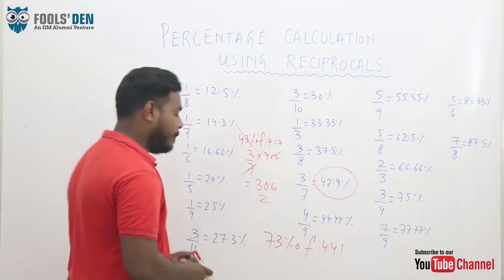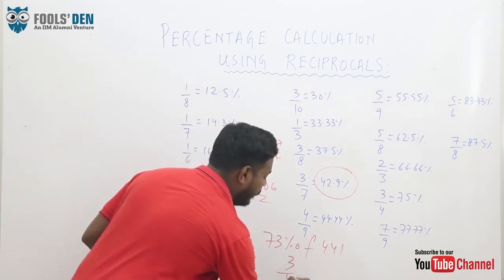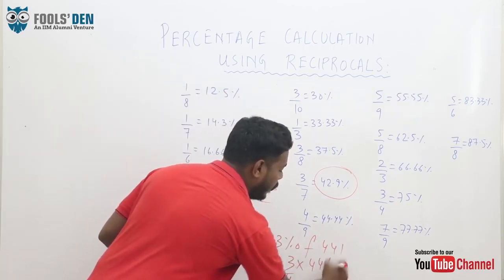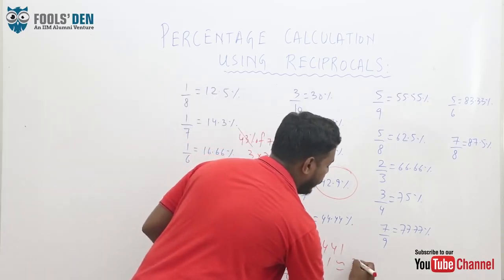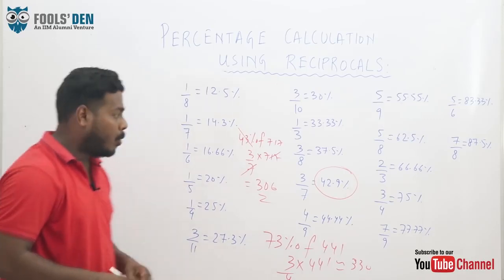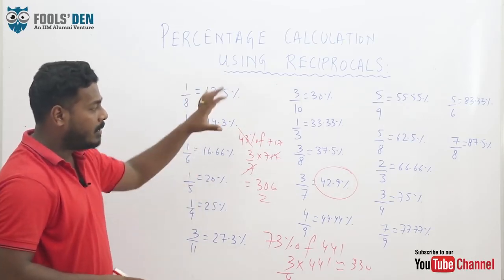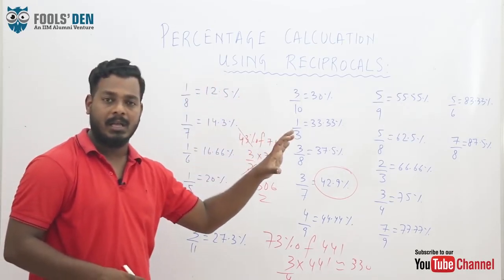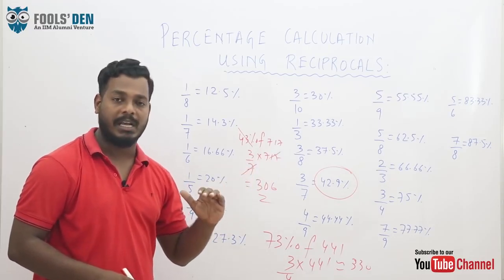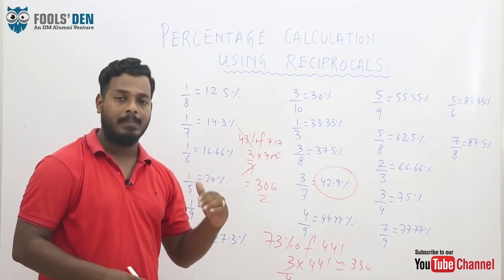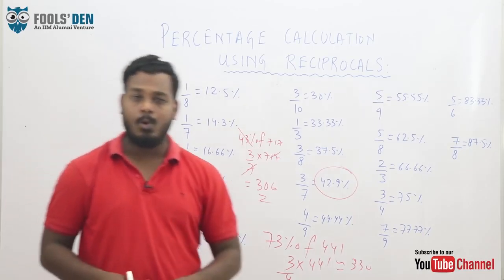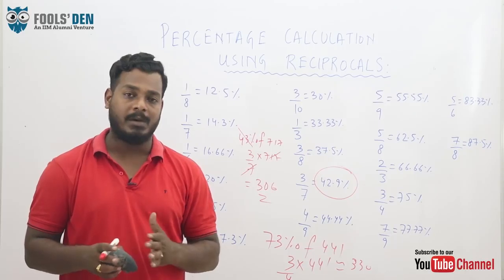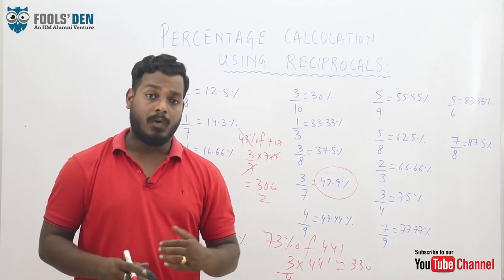This is 3 by 4 so I will simply calculate 3 by 4 of 441 which is approximately 330. So if you remember this whole chart or matrix you can calculate most of the percentages in a really easy and fast manner.